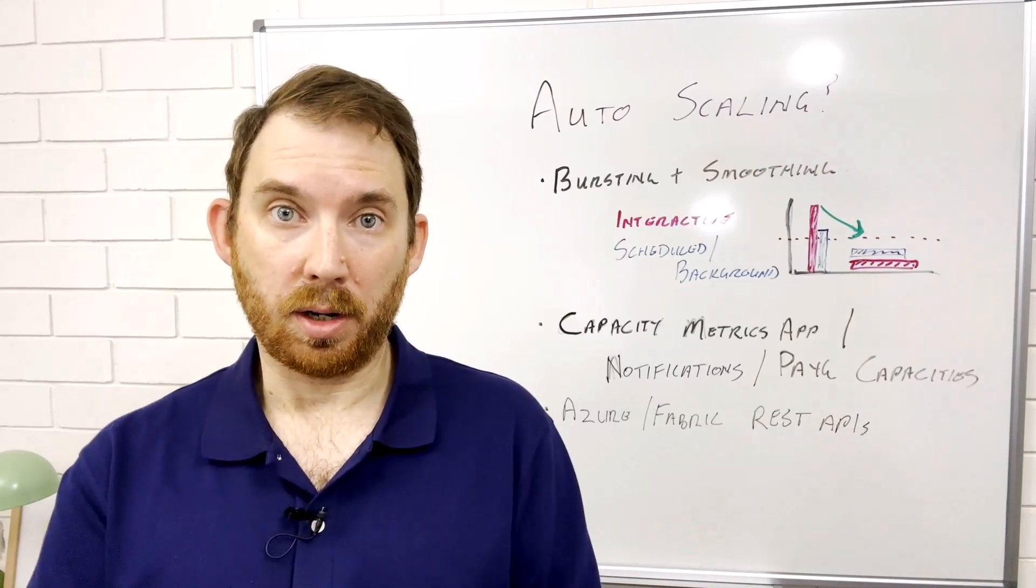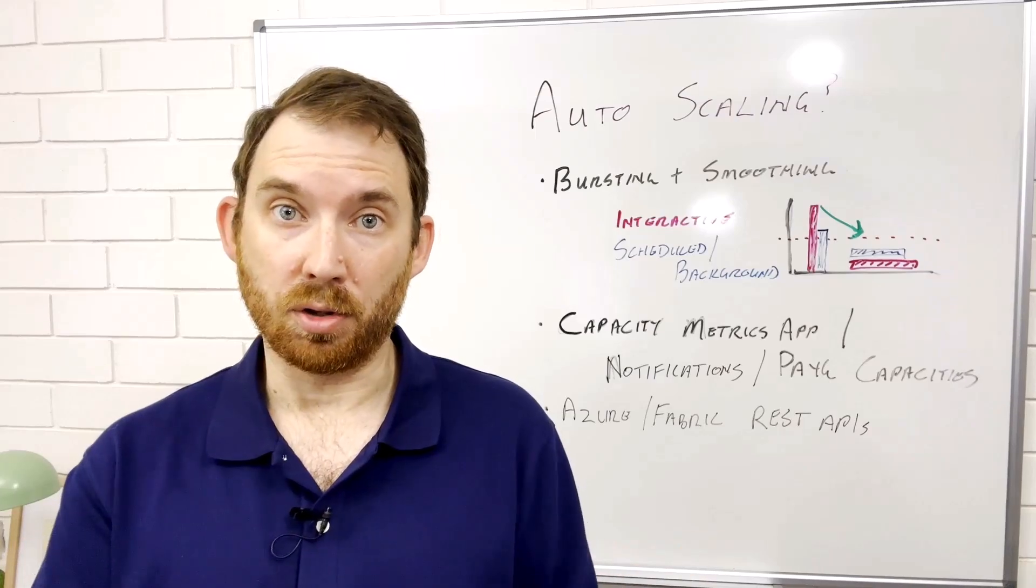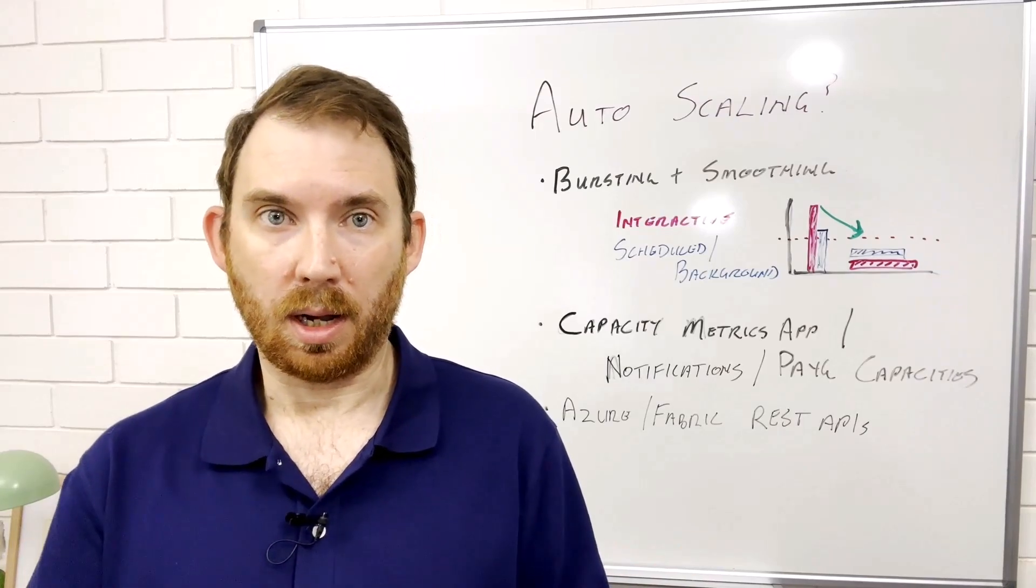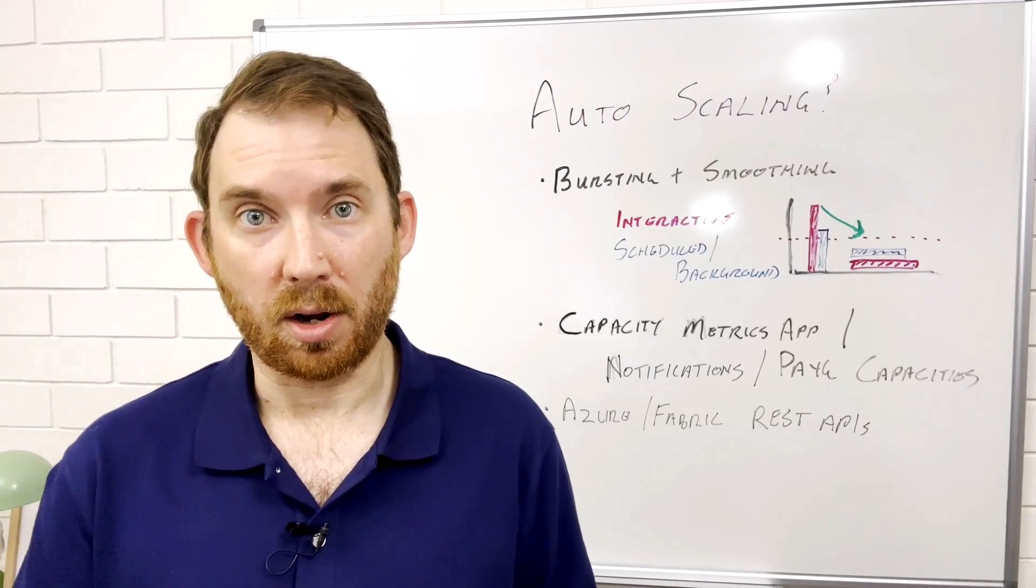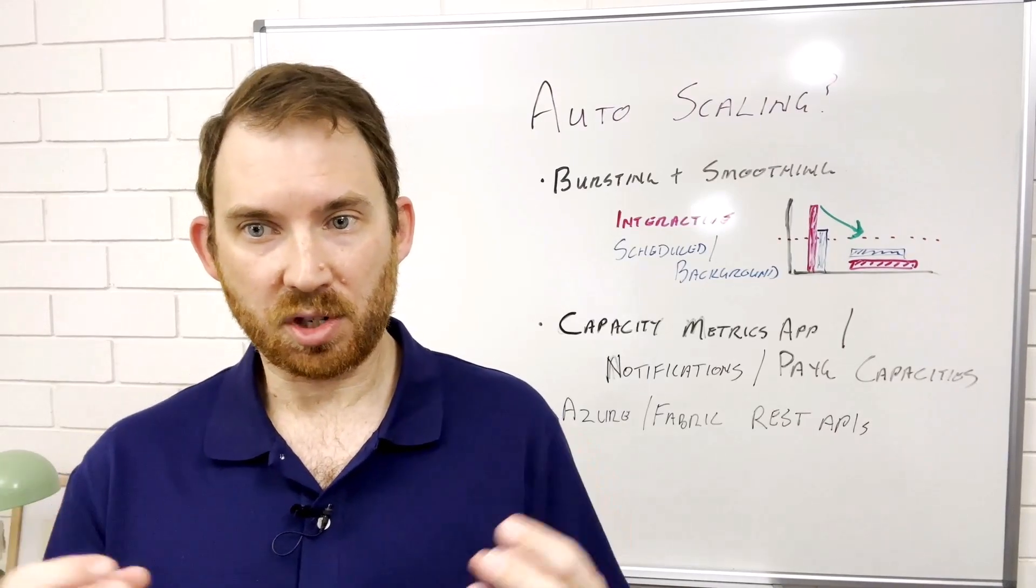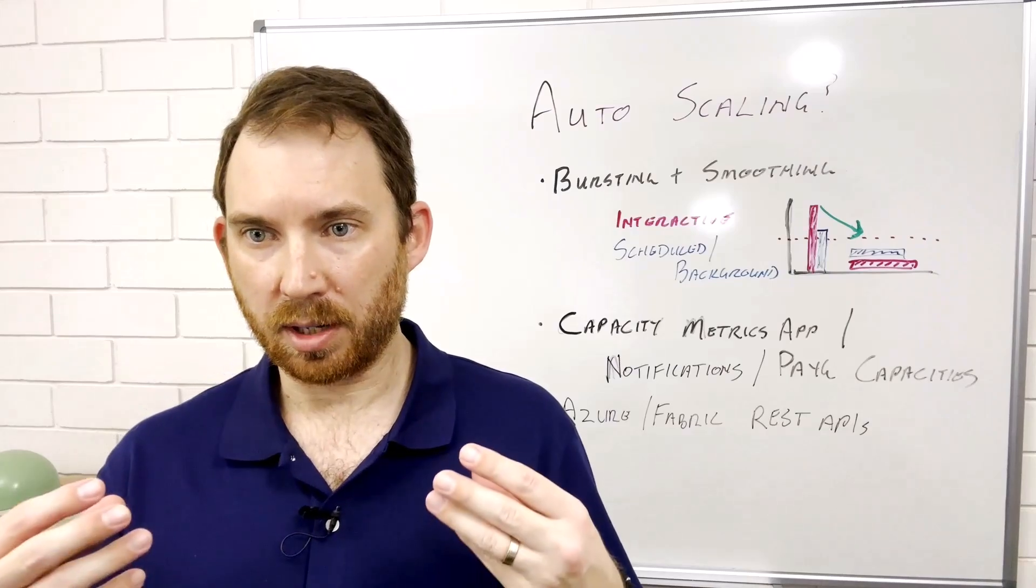Hi my name is Peter and I help organizations understand what they can do with Microsoft Fabric as well as anything else surrounding the Microsoft data and AI ecosystem. The question I got was around can we have auto scaling, scaling up and down option like we did with premium capacity.